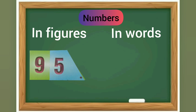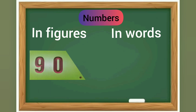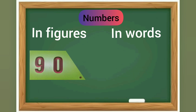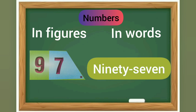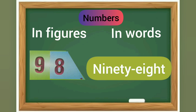95. In words it is N-I-N-E-T-Y F-I-V-E, ninety-five. 90 and 6 is 96. N-I-N-E-T-Y S-I-X, ninety-six. 90 and 7 is 97. In words: N-I-N-E-T-Y S-E-V-E-N, ninety-seven. 90 and 8 is 98. In words: N-I-N-E-T-Y E-I-G-H-T, ninety-eight.